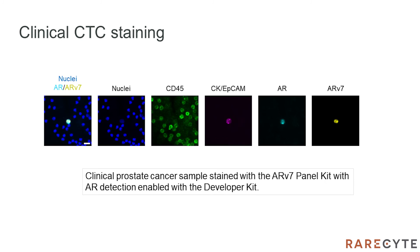After development, the custom assay can be applied to clinical samples. Here we have a prostate cancer sample stained using the ARV7 panel kit, with AR added using the developer kit. As expected, ARV7 has clear nuclear localization, while AR is expressed both in the cytoplasm and the nucleus.